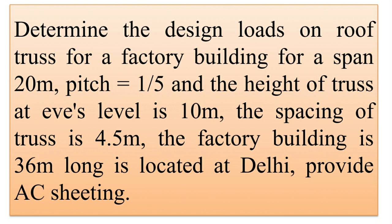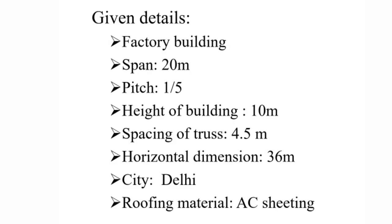First of all, it is a factory building. Its span is 20 meters and pitch equals 1 by 5. Pitch is rise of the truss divided by span of the truss. Height equals 10 meters, spacing equals 4.5 meters — that is the distance between consecutive trusses. The horizontal dimension of the building is 36 meters. Pin location: Delhi.